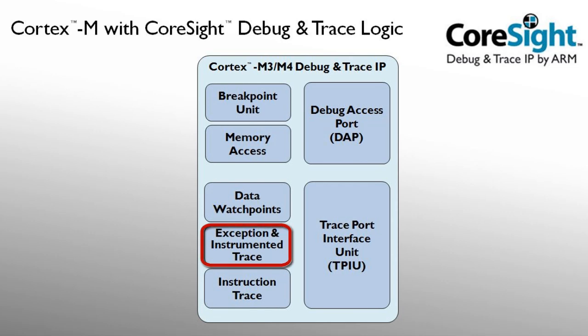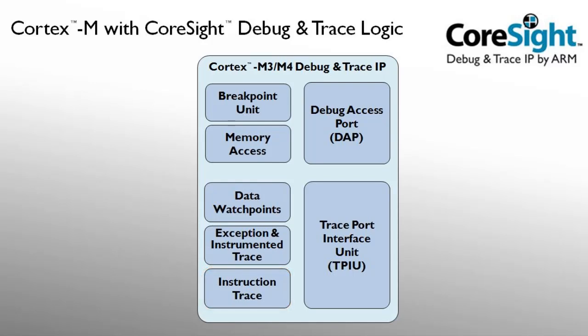Exception and instrumented trace communicate important program events via debug channels. Instruction trace streams the complete program execution for recording and analysis. The various trace types can be selectively enabled and contain timing information. Let me exemplify the usage of these trace features in the microvision debugger.